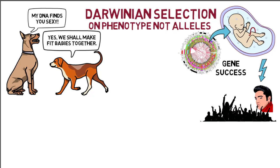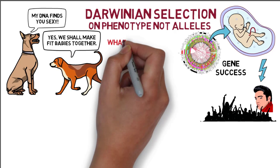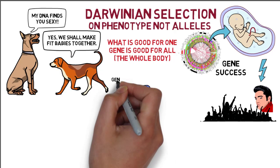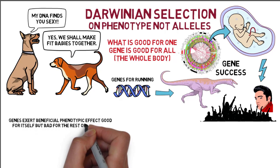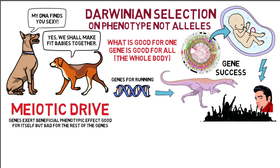Most genes have more than one phenotypic effect. What is good for one gene is good for all — the whole body — as in the example of a gene that improves the running speed of a predator, which helps it survive. However, some genes exert beneficial phenotypic effects good for itself but bad for the rest of the genes. This process is called meiotic drive.